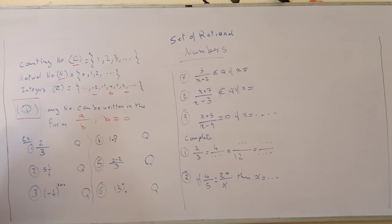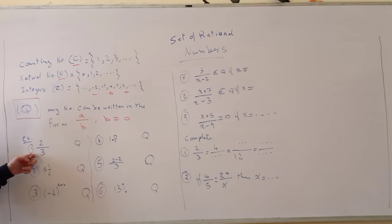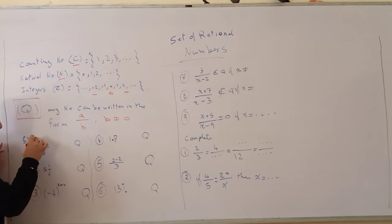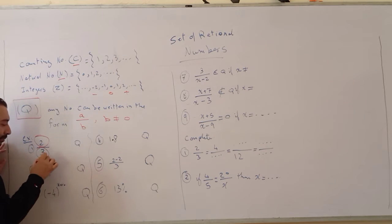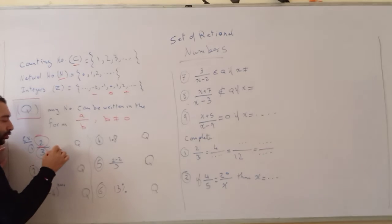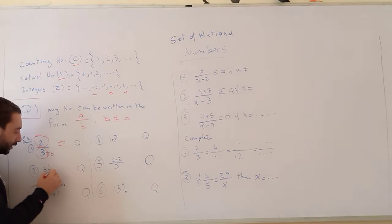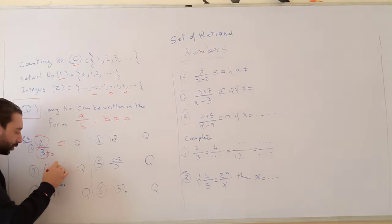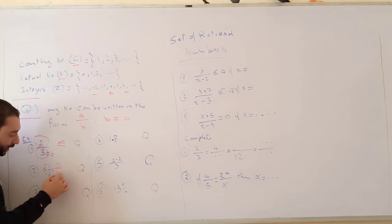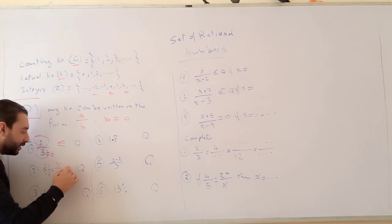Let's practice some questions. 2 over 3 — does it belong to Q? It is written in the form A over B, and B is not equal to 0, so it does belong to Q. Next, 5 and 1 over 6. This is a mixed number. We can convert it to an improper fraction: 6 times 5 equals 30, plus 1 equals 31 over 6. This is written in the form A over B, and B is not equal to 0, so this belongs to Q.